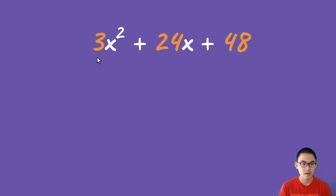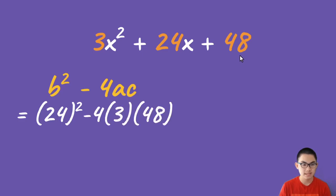So how about 3x squared plus 24x plus 48? Well, again, here is the discriminant. And b to the power of 2 is just 24 squared minus 4 times a, which is 3, and c, which is 48. And so if you calculate this, this gives you 576 minus itself, which is just 0.